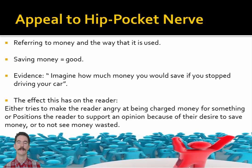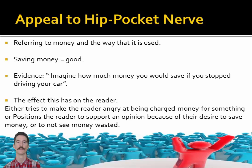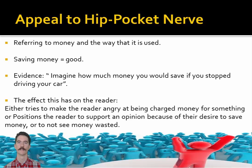Appeal to hip pocket nerve. This is basically any reference to money — how it should be spent, saved or taxed. In three words: saving money equals good. Our example is 'Imagine how much money you would save if you stopped driving your car.' The effect is usually it tries to make the reader angry about money being wasted or lost, or it uses it positively to say you could be much richer if you did a certain thing.